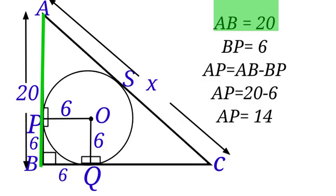AB equals to 20, BP equals to 6. So AP will be equals to AB minus BP. AP will be equals to 20 minus 6, that is 14. AP equals to 14 units.